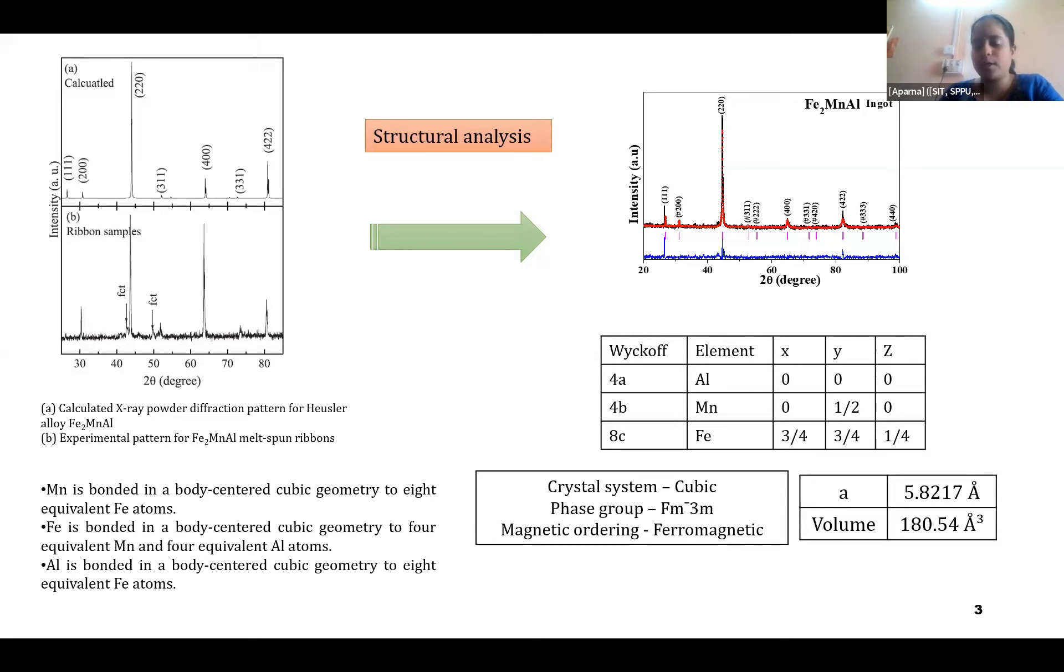But the basic crystal structure of this material is cubic and having a space group of FM3M, and they have been studied to have ferromagnetic ordering. And from the Rietveld refinement pattern, I have obtained a lattice parameter of 5.82 angstrom.